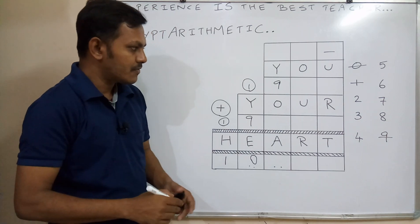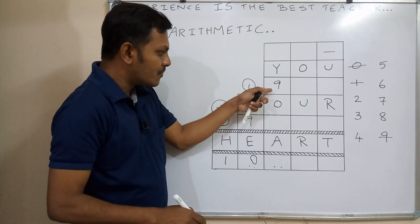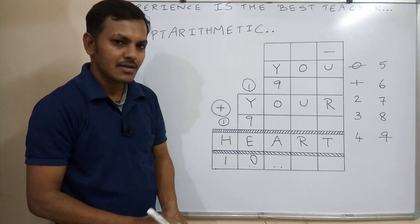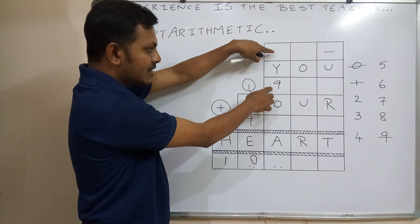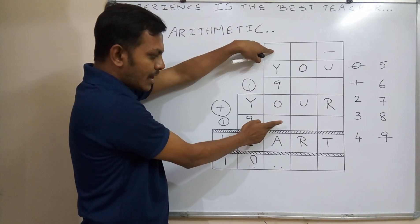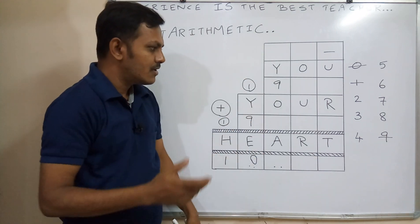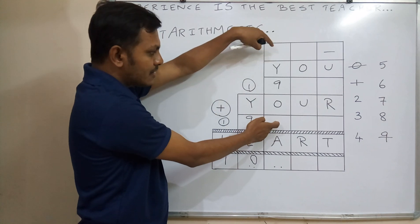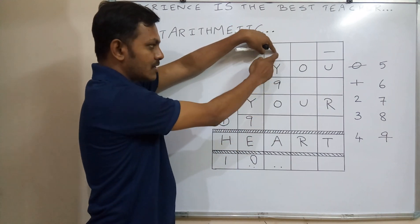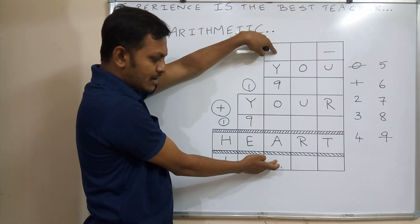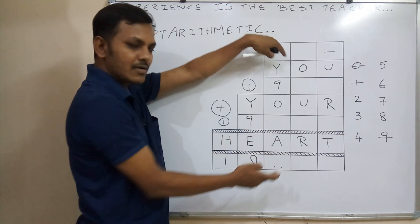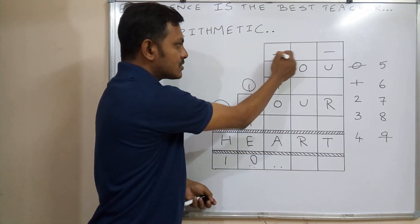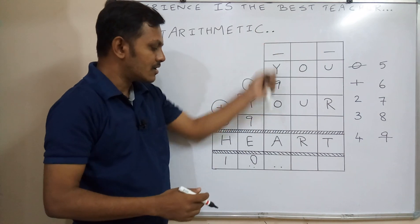Here is one trick we are going to use: whatever number is added with 9 with carry-over, those two letters will reflect the same digit. For example, if we write number 8 — 8 plus 9 with carry-over is 17 plus 1 equals 18, so we write 8 — meaning O and A would get the same digit 8. To avoid that, this column must have no carry-over, meaning the previous column produces a single-digit number.